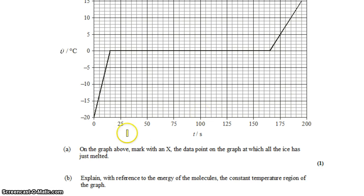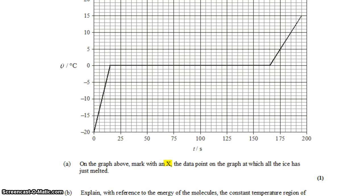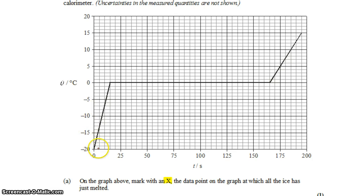In Part A, we're asked to mark with an X the data point on the graph at which all of the ice has just melted. So we start with ice at the beginning, and then its temperature starts to rise. But then its temperature stops rising, and that's when it starts melting. And it continues melting until right here, where it's all melted. And then we have water increasing in temperature.